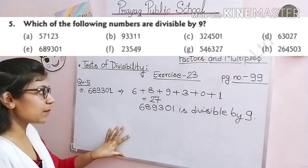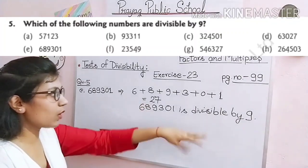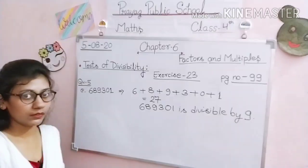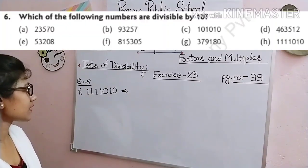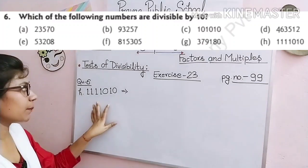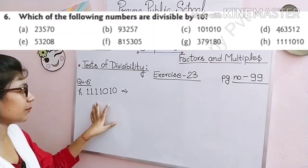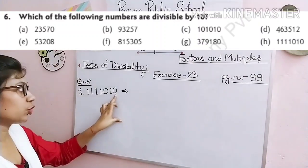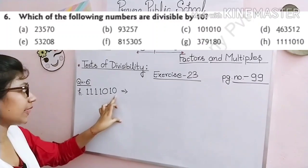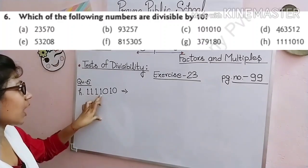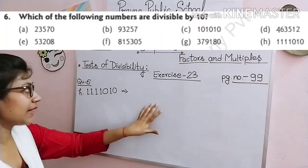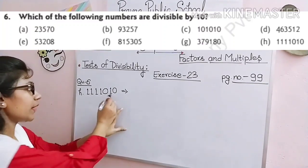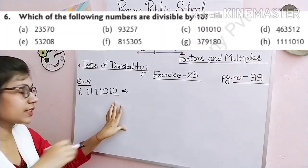In the same way, check the remaining numbers — if their digit sum is divisible by 9, then the given number is also divisible by 9, otherwise not. Question number 6: check whether the given numbers are divisible by 10. The rule is: if the number ends in 0, it is divisible by 10. 11,0010 ends in 0, therefore 11,0010 is divisible by 10.